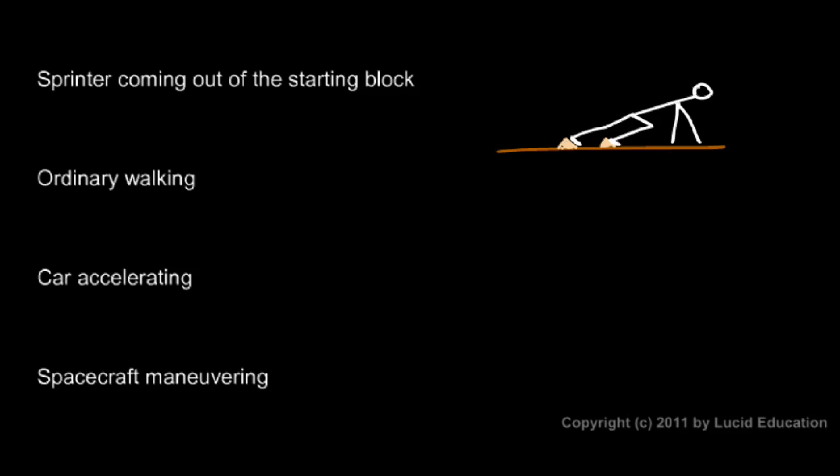Now, why don't the starting blocks accelerate to the left? Because they're fastened into the ground or into the track. The runner is not fastened in. He's free to move. And so when he pushes to the left on the starting blocks, he ends up moving to the right. Or in this case, he pushes back on the starting blocks and he ends up moving forward.